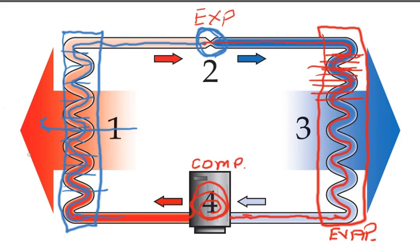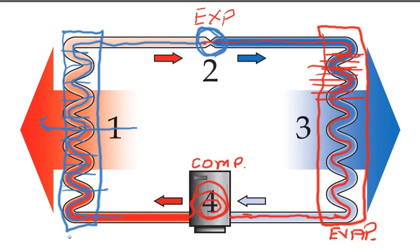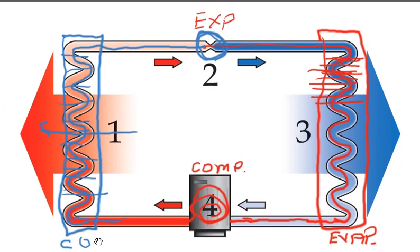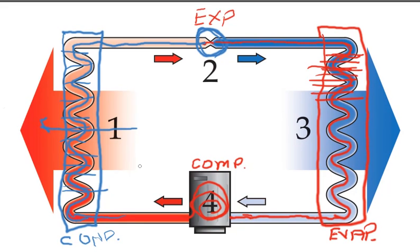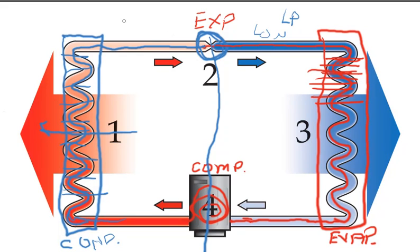So we have the evaporator and then we have our condenser. We also have what's called the low side and the high side of the system. That happens right here, the low side. You'll hear it referred to as low pressure or low side, and then the high pressure or high side.